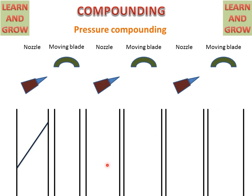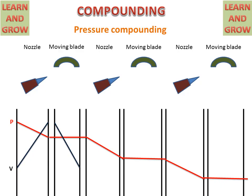In the nozzle, velocity increases and pressure decreases. On the moving blade, pressure remains almost constant. In the next nozzle, pressure further decreases. On the moving blade, pressure is again almost constant. In the third nozzle, pressure decreases, and on the moving blade it is constant. For velocity: on the moving blade, velocity decreases due to loss of kinetic energy. In the next nozzle, velocity increases again, then decreases on the moving blade. This pattern repeats for each stage.